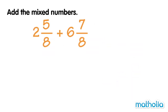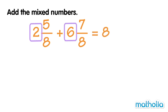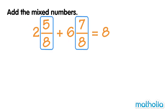Let's find 2 and 5 eighths plus 6 and 7 eighths. First, add the whole numbers: 2 plus 6 equals 8. Next, add the fractions: 5 eighths plus 7 eighths equals 12 eighths. Finally, we simplify.